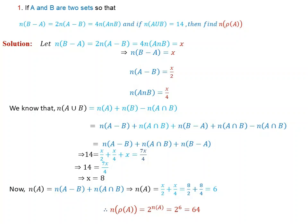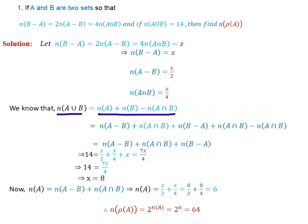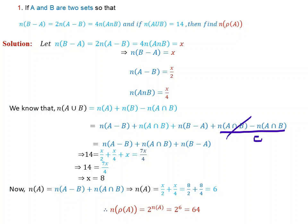By rearranging, we obtain: number of A equals number of A without B plus number of A intersection B, and number of B equals number of B without A plus number of A intersection B. So number of A union B equals number of A without B plus number of A intersection B plus number of B without A plus number of A intersection B minus number of A intersection B.